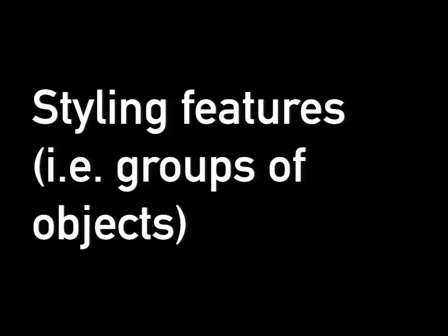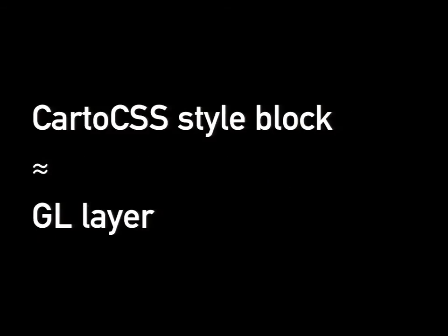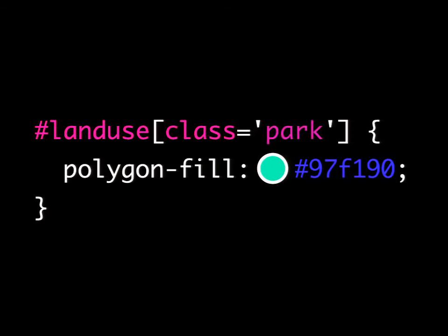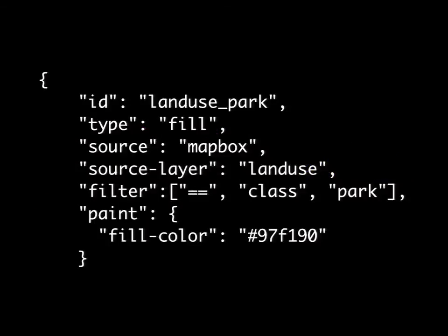I'm going to focus mostly on styling features — groups of objects from your data source — because that's really the meat of any map style, whether it's a Carto CSS style or a Mapbox GL style. By styling features, I mean defining a group of data objects and then writing rules that say what these objects should look like. What we consider a style block in Carto CSS is pretty directly equivalent to what we'd call a GL layer — just a little chunk of code specific to styling a group of features.